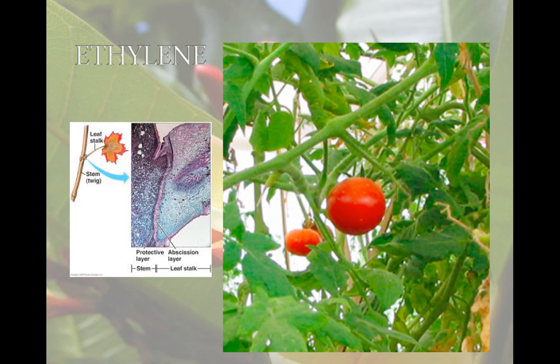Ethylene is a gas, and it triggers aging. Fruit ripens and causes cell death. It's produced in response to stress. Flushing with carbon dioxide inhibits fruit ripening. Ethylene also causes the leaves to fall off in autumn. The leaf separates from the stem at the abscission layer, which is a narrow band of parenchyma cells.